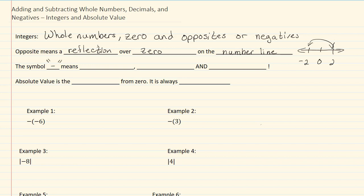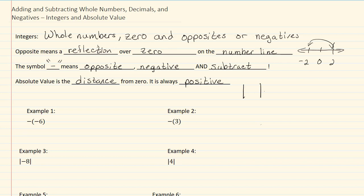The symbol of a dash or minus sign means opposite, negative, and subtract all at the same time. The absolute value is the distance from zero, and it is always positive because we can only travel positive distances. The symbol for an absolute value is two straight lines, and inside those straight lines can be numbers or letters.